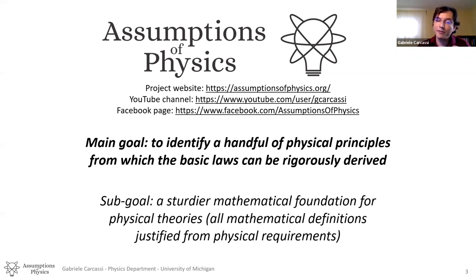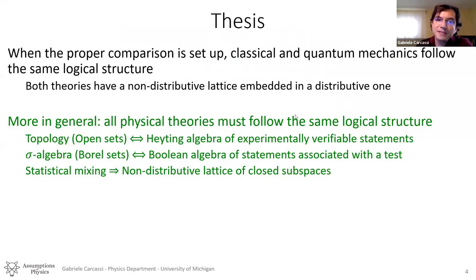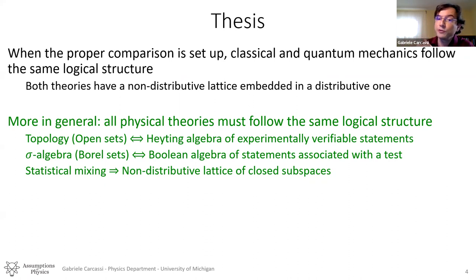We want to understand exactly what is the mathematical structure inside this theory as related to logic. The two main theses that we're going to present are: first, when the proper comparison is set up between classical and quantum mechanics, you see that they follow the same logical structure, that there is no need for a different type of logic in quantum mechanics. In fact, it's so similar that both theories have a non-distributive lattice that is embedded in a distributive one.